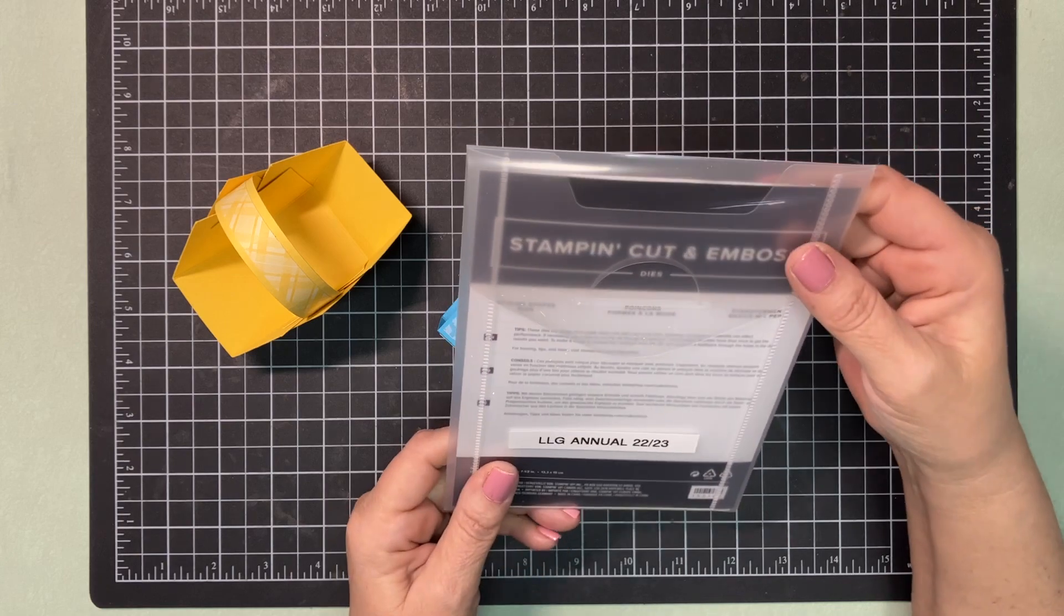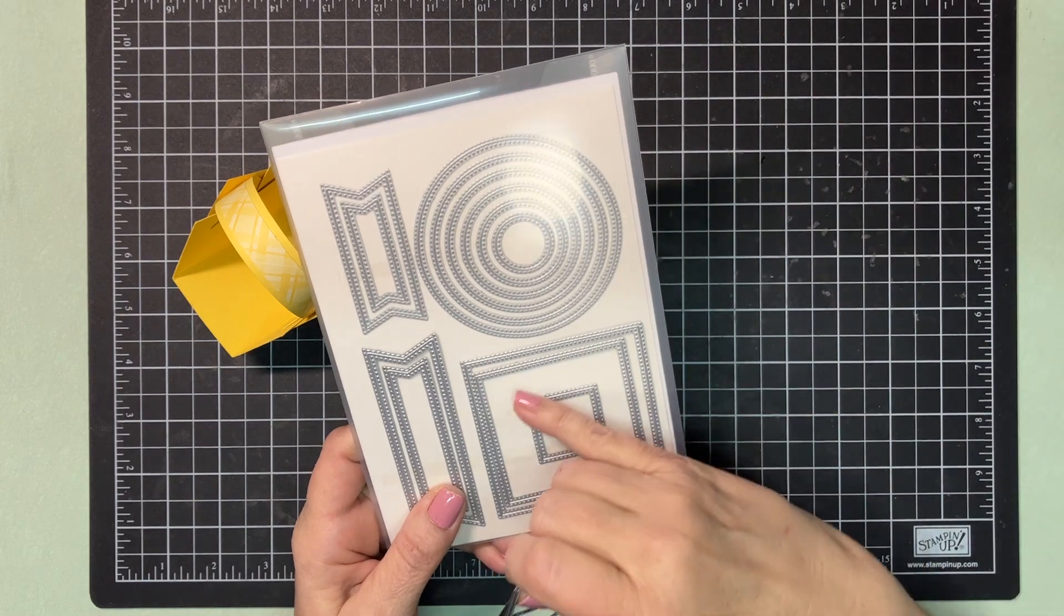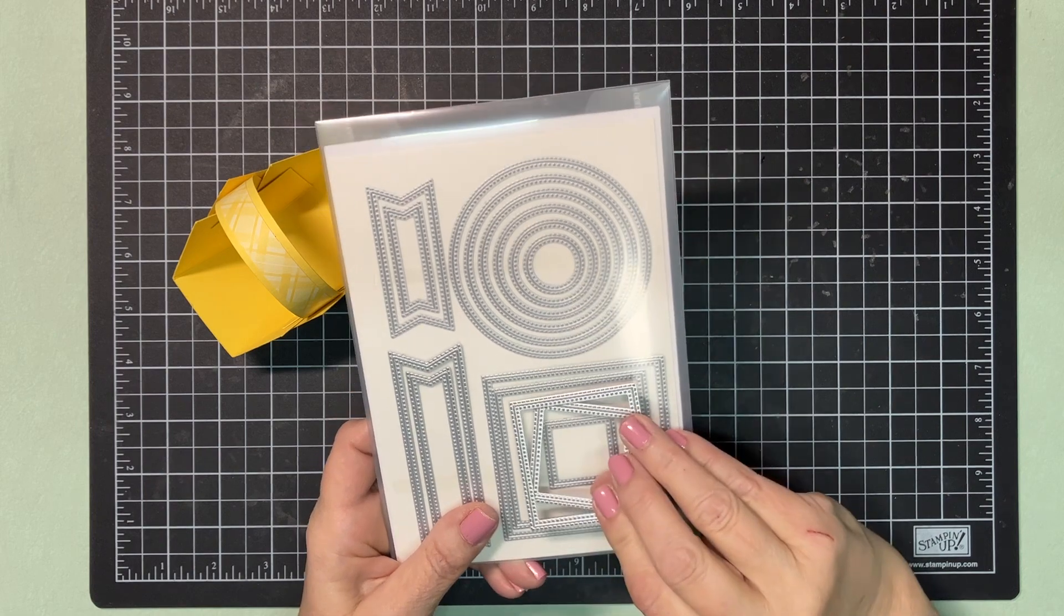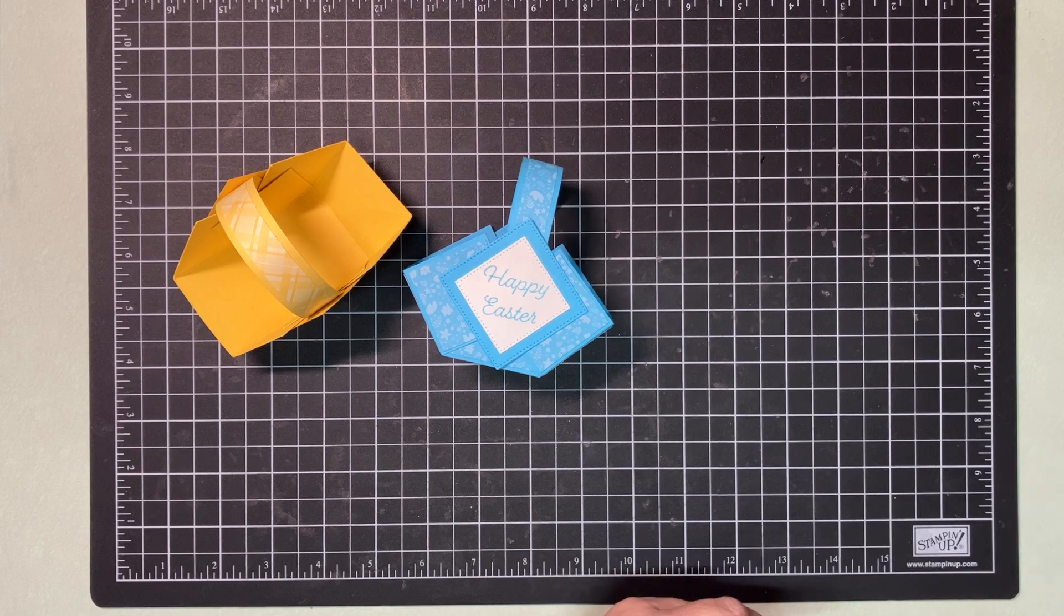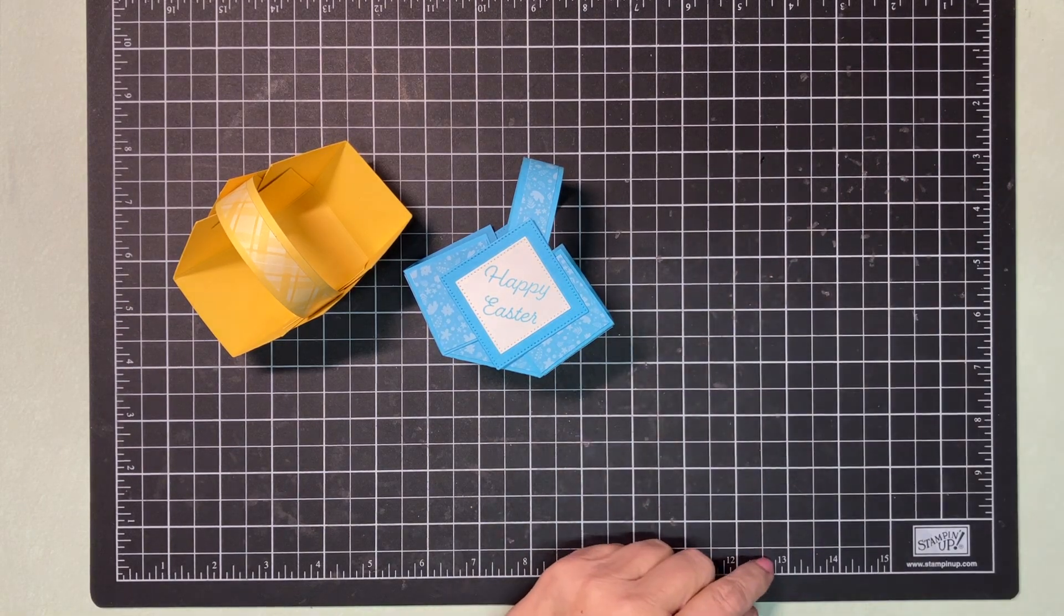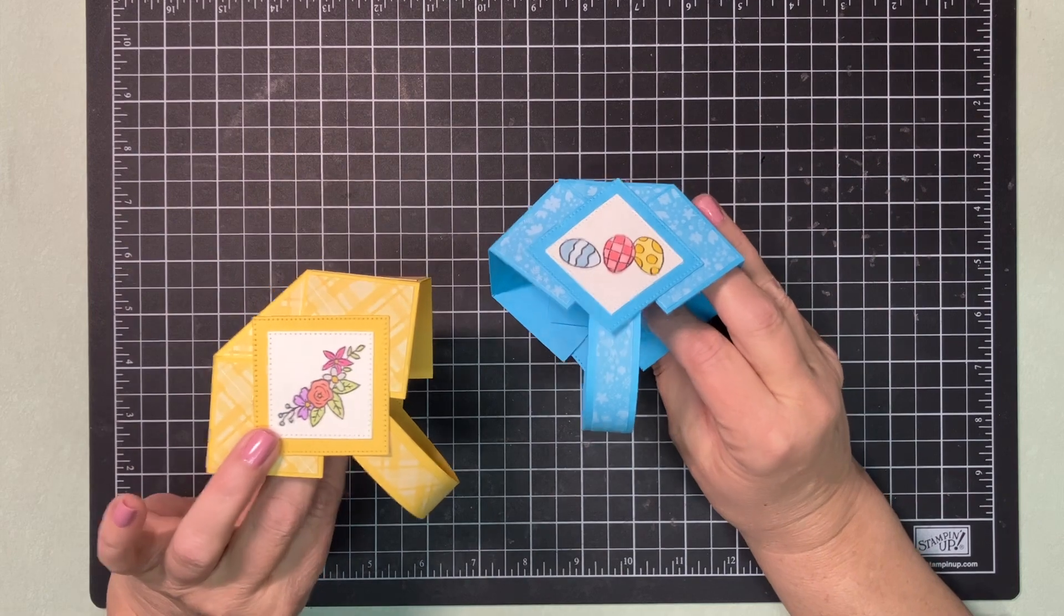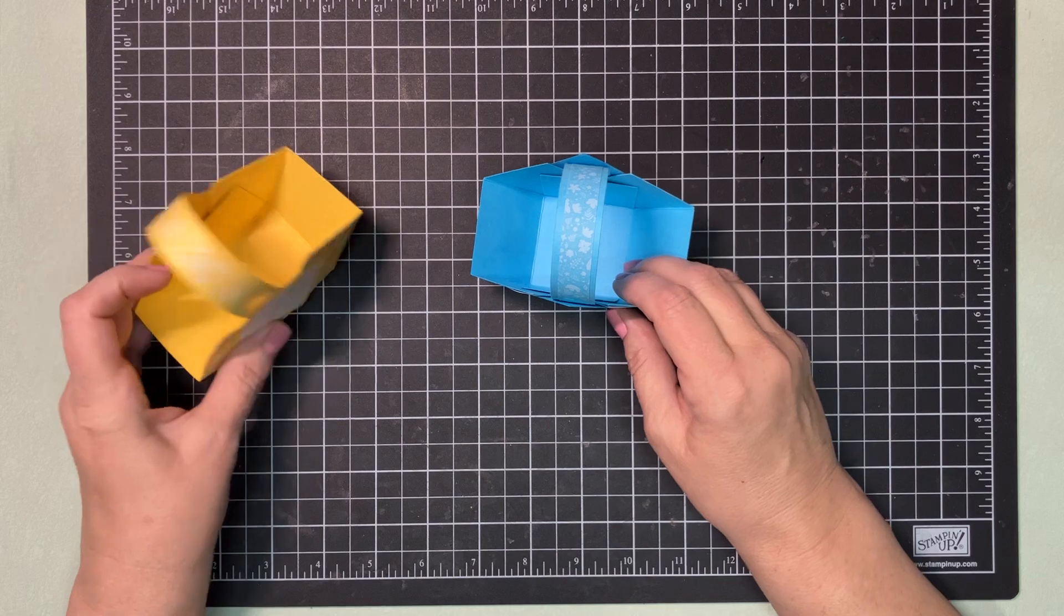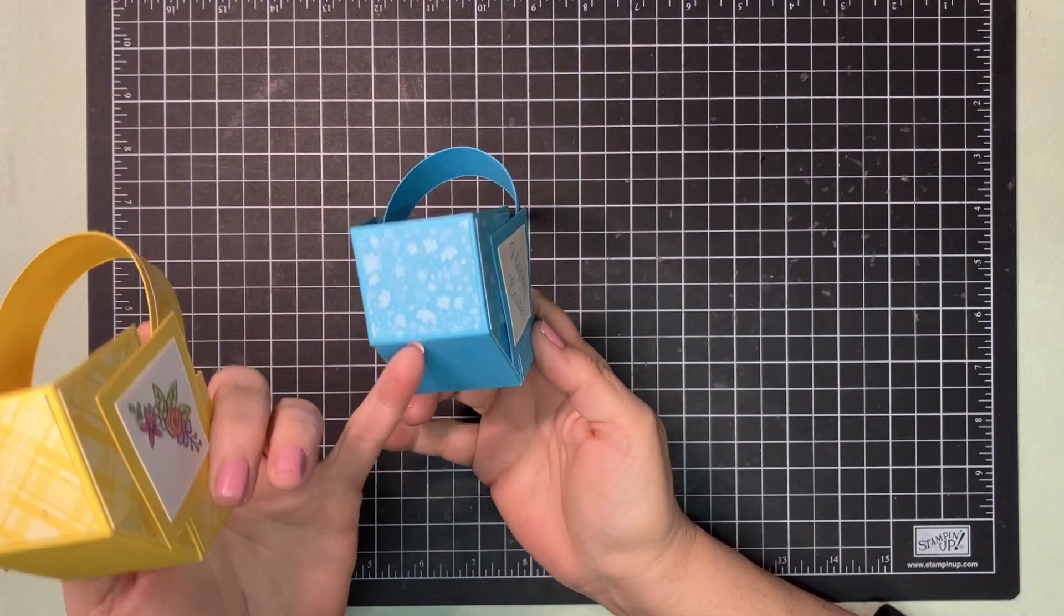We're going to be using for the die for these pieces, we are using the Stylish Shapes dies and we are going to be using the two squares here and they have a stitch on them which I really love. This is a really nice set. I know it's been back ordered quite a bit this year and it was back in stock so I finally got mine. I have to wait like everybody else.